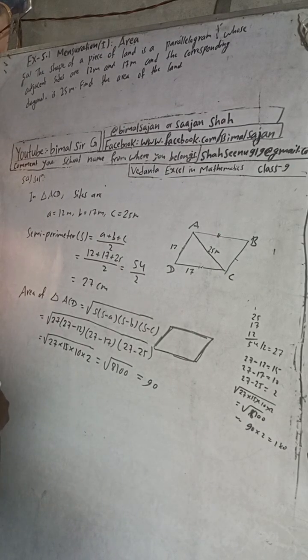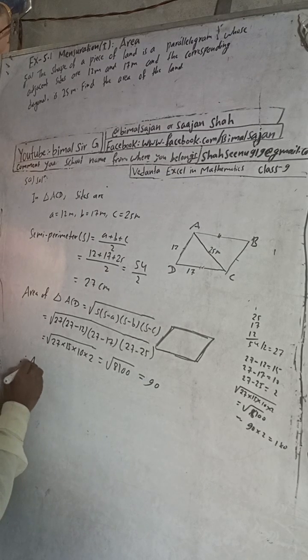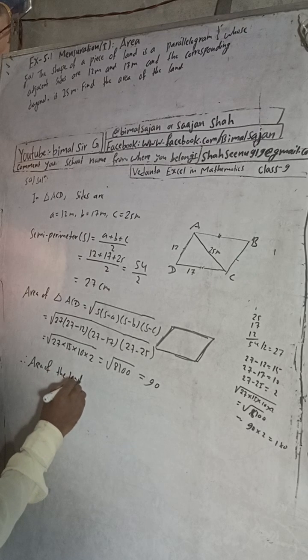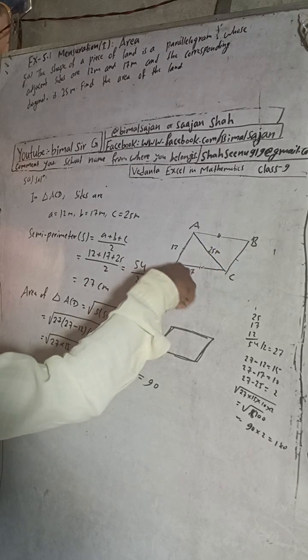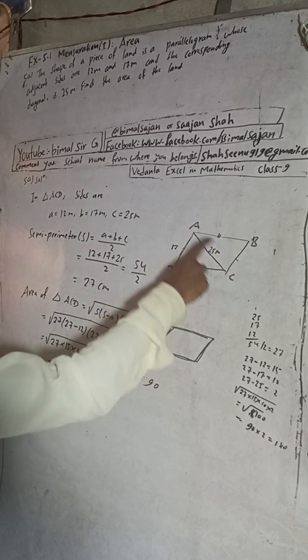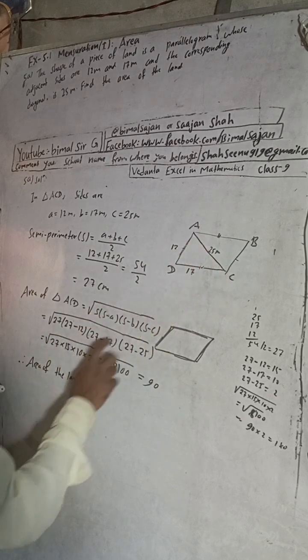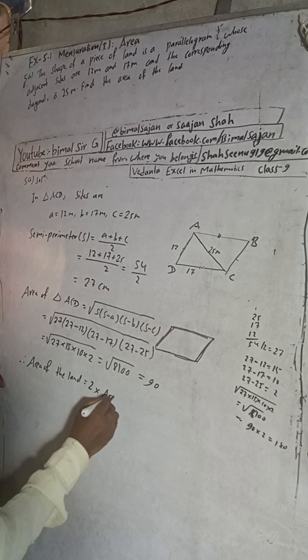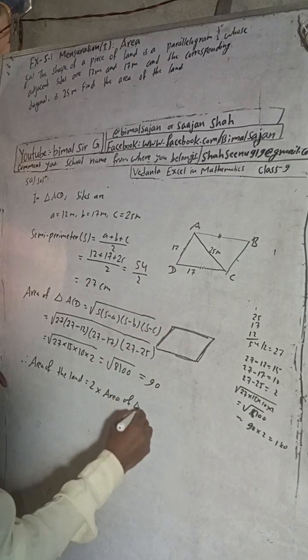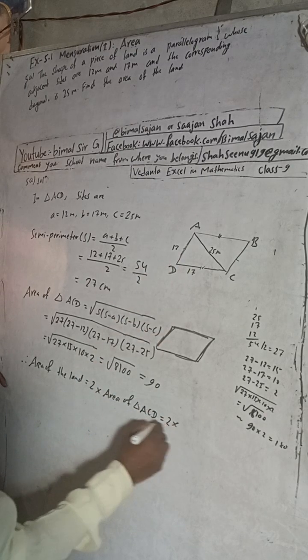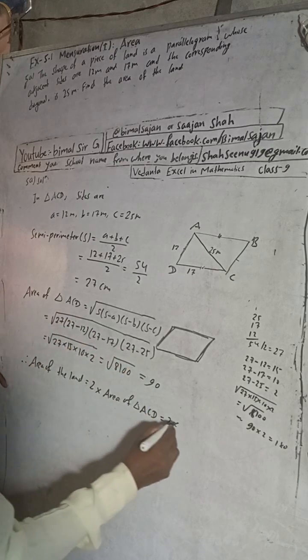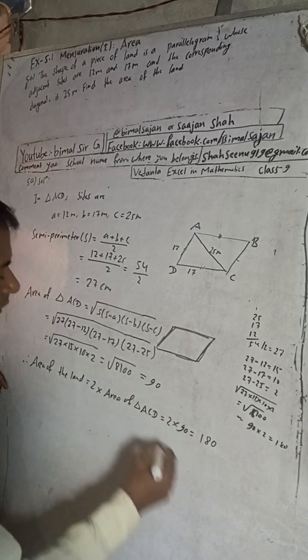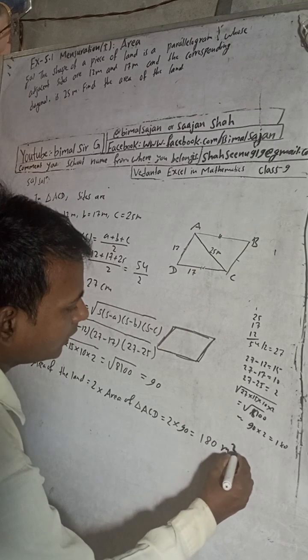Now find the area of the land. Therefore the area of the land, this is the shape of the land, this is the parallelogram. We got half triangle, so this total area will be 2 into area of triangle ACD. 2 into 90, which is 180, and this is meter square. Area will be meter square. This is the answer.